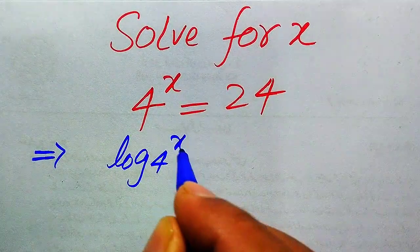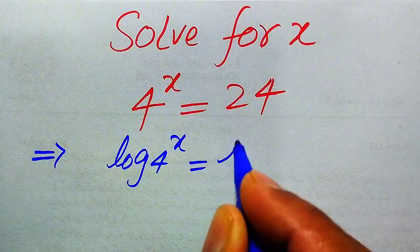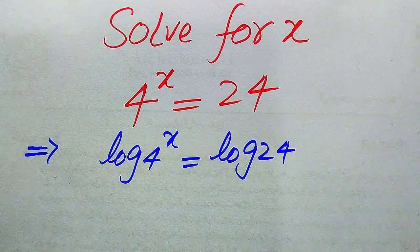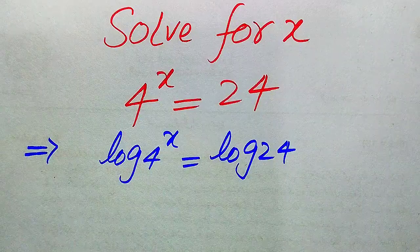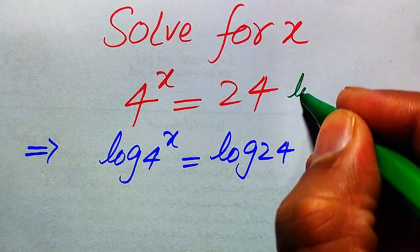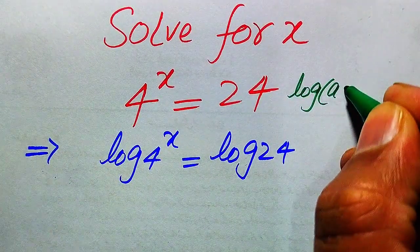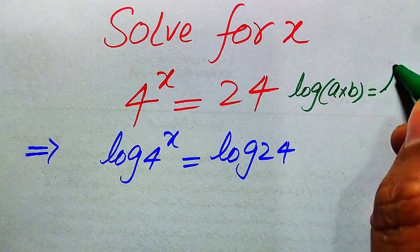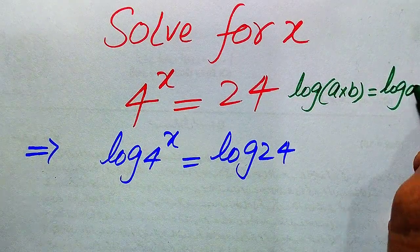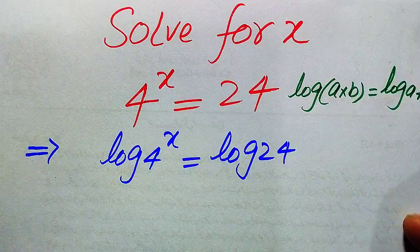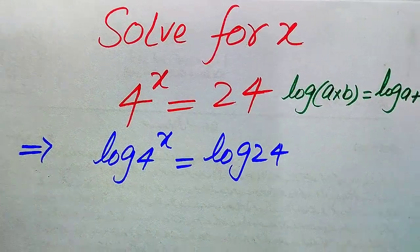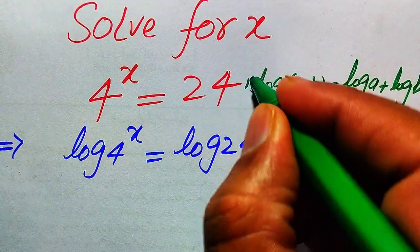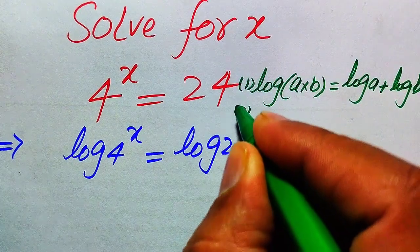When we take log, it will be written as log of 4 to the power of x equals log of 24. Here we need to use the property of log: if we have log of a multiplied by b, it equals log of a plus log of b.